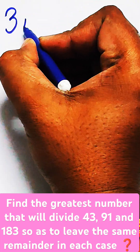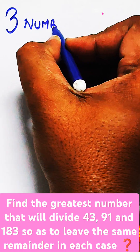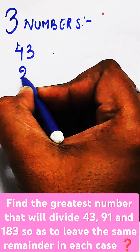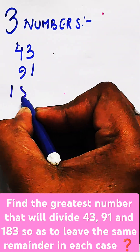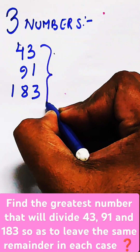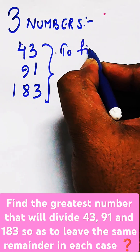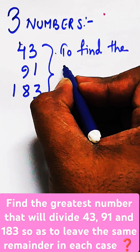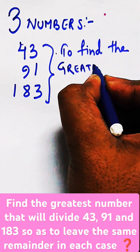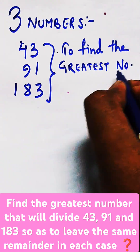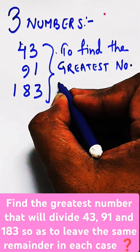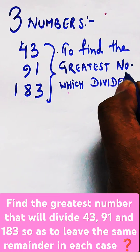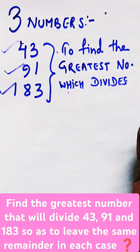In this mathematics question, three numbers are given to us: 43, 91, and 183. We need to find the greatest natural number which divides all three of these numbers — 43, 91, and 183 — to leave the same remainder. When that number divides 43, 91, and 183, it leaves the same remainder each time.